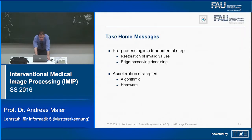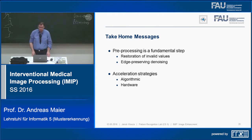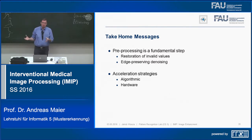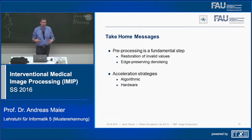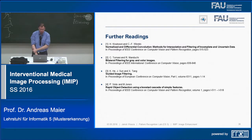Take-home messages: pre-processing is a fundamental step. We can restore invalid values by identifying them, for example by detecting outliers. We discussed edge-preserving denoising. For efficiency: choose good algorithms implementable in real time, and use highly parallel hardware for fast processing. These are the main concepts to take home, along with suggested further readings.